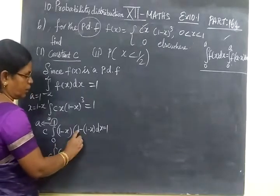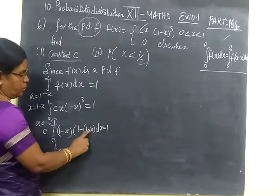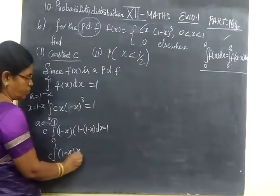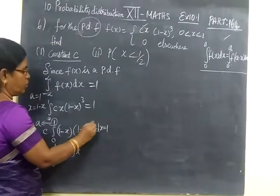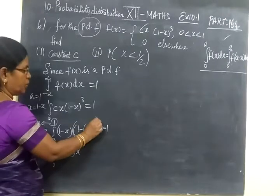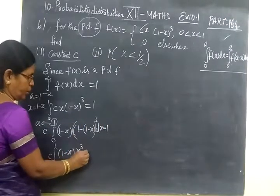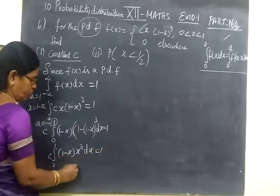So you are getting 0 to 1, 1 minus, 1 minus 1, 0. This is minus minus plus. This is the whole cube. Here you write whole cube. So x cube, then dx equal to 1.